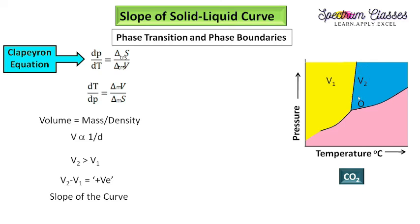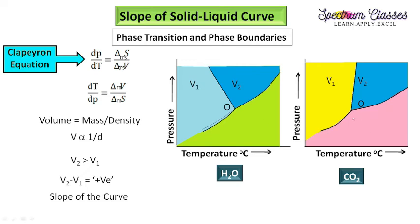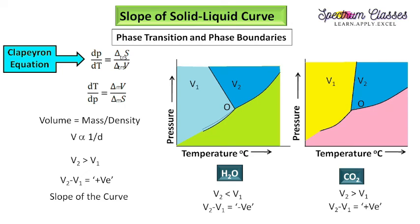Showing water and CO₂ in one frame: for CO₂ there is a positive slope, and for H₂O there is a negative slope. In water, V₂ (liquid volume) is less than V₁ (solid volume), giving a negative slope. For CO₂, V₂ is greater than V₁, giving a positive slope. This is the only difference between the CO₂ and H₂O phase diagrams.